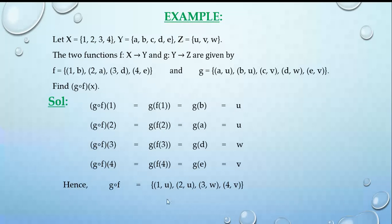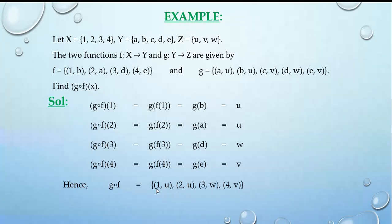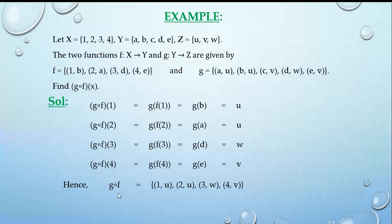The composition g of f, expressed as ordered pairs, is: {(1,u), (2,u), (3,w), (4,v)}. Here the first element is from X (the domain) and the second is the image under g of f.